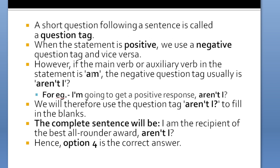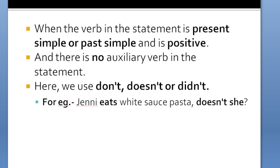If the statement is affirmative, the tag will be negative. If there is 'is,' we write 'isn't'; if there is 'are,' we write 'aren't'; and if there is 'am,' the short form of 'am not' is 'aren't.' So we use 'aren't I' as the question tag. The complete sentence is: 'I am the recipient of the best all-rounder award, aren't I?' Option 4 is the correct answer.